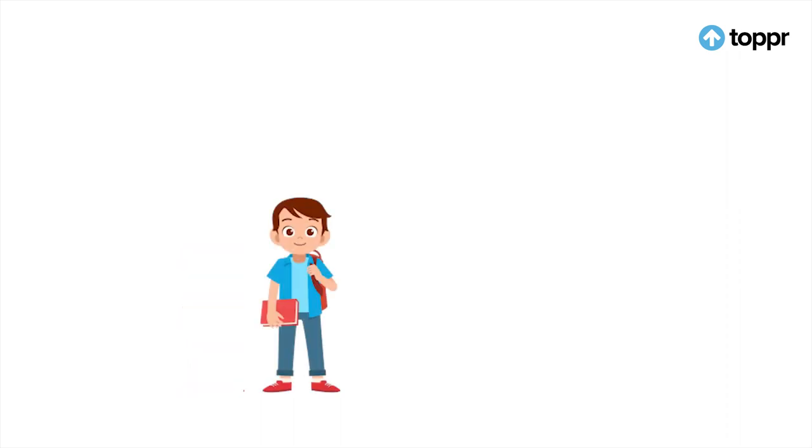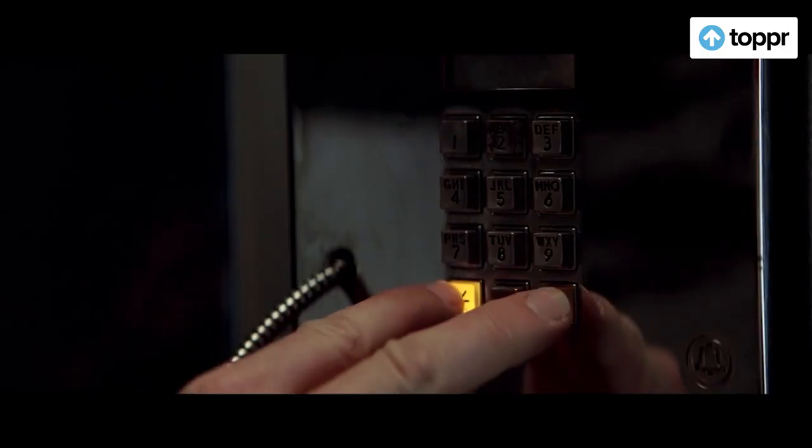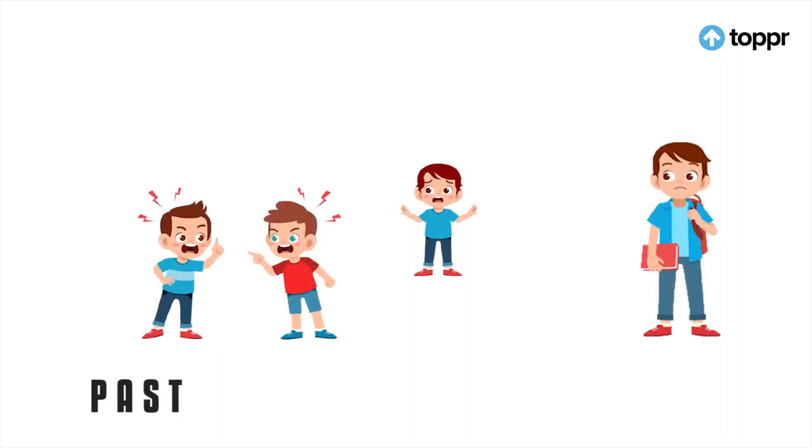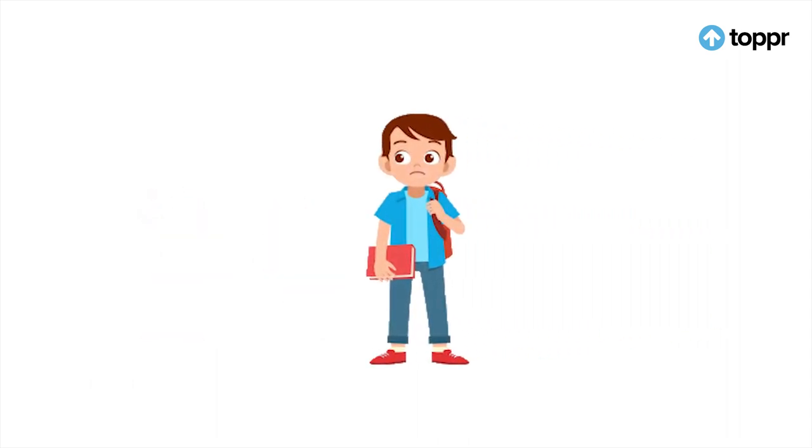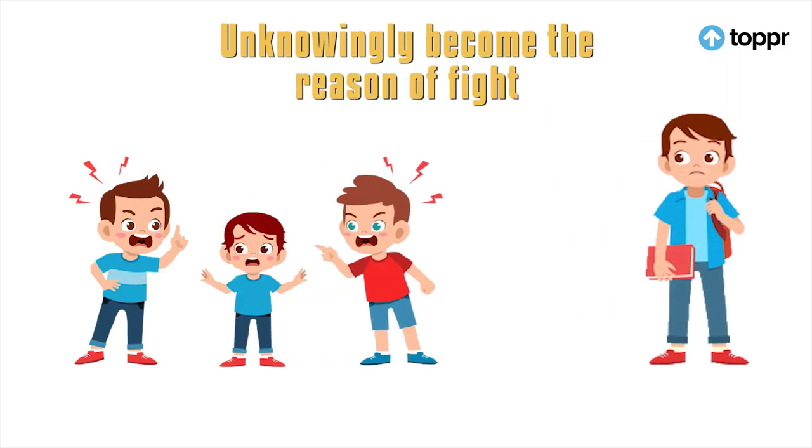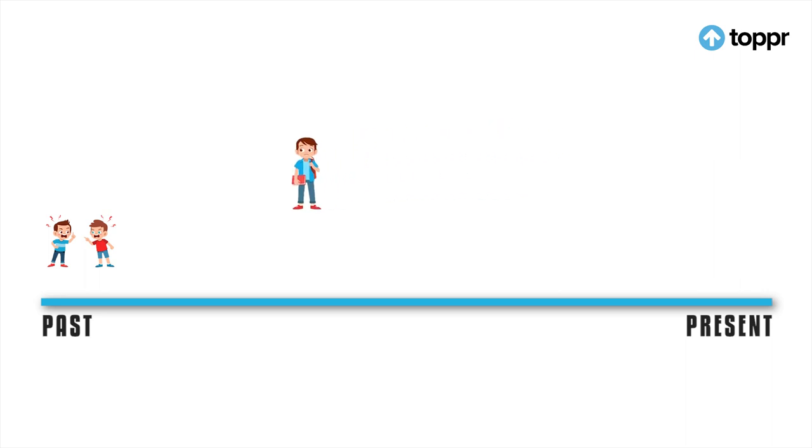Aapko kai saal lag jaate hain time machine banane. Aap past mein jaate hain aur us ladai ke reason ka investigation karne lagte hain. Is baat ka jawab dhundhte dhundhte aap anjane mein un dono ki ladai ka karan ban jaate hain. Phir aap baar baar past mein jaate hain sab thik karne ki koshish karte hain aur har baar unki ladai ka karan ban jaate hain.